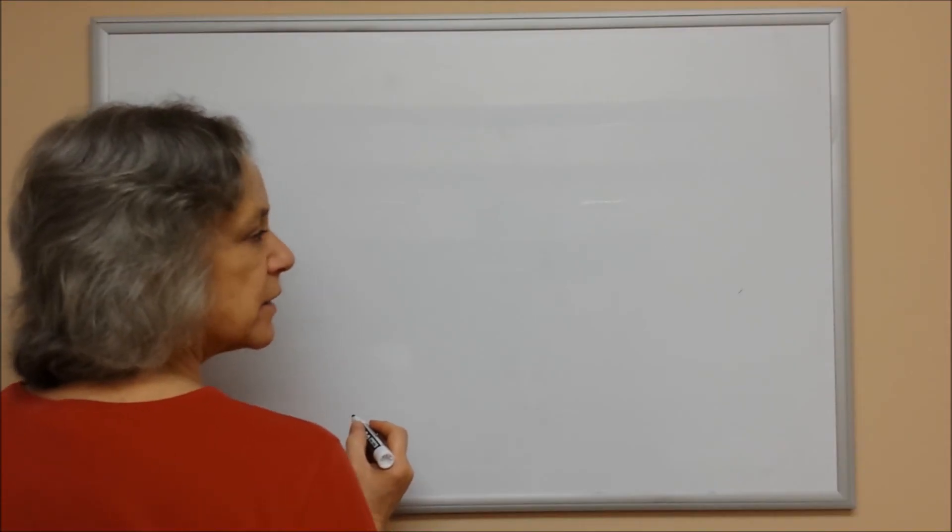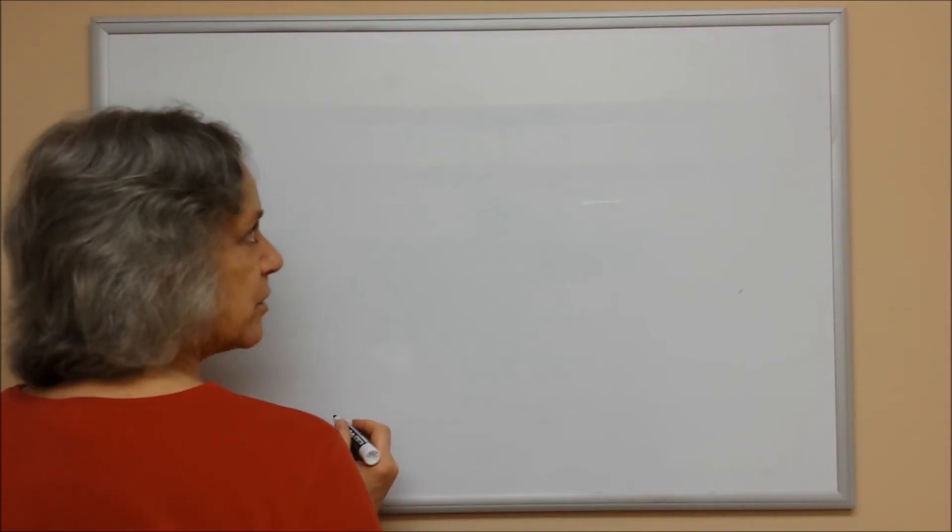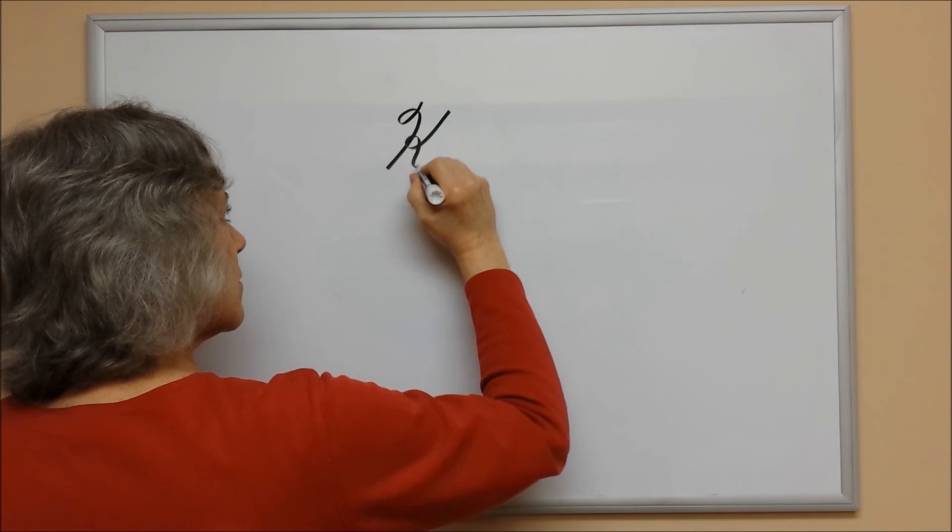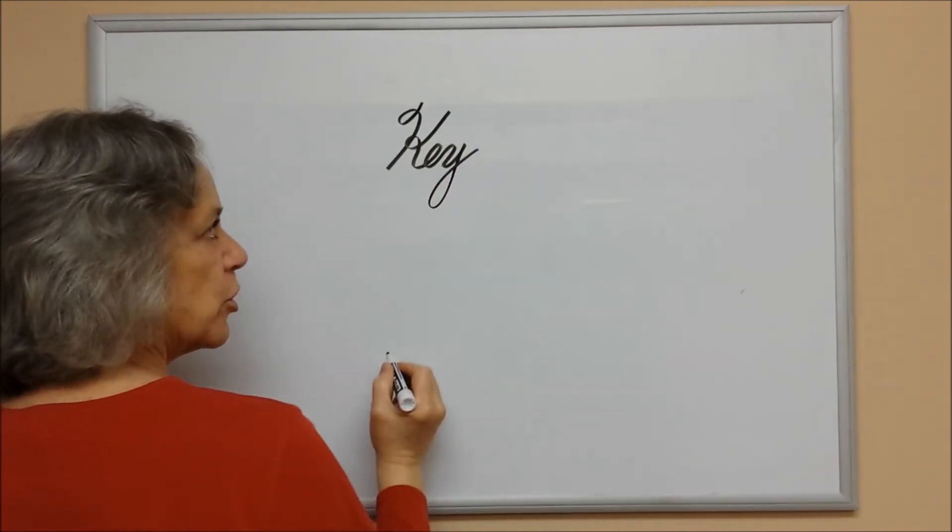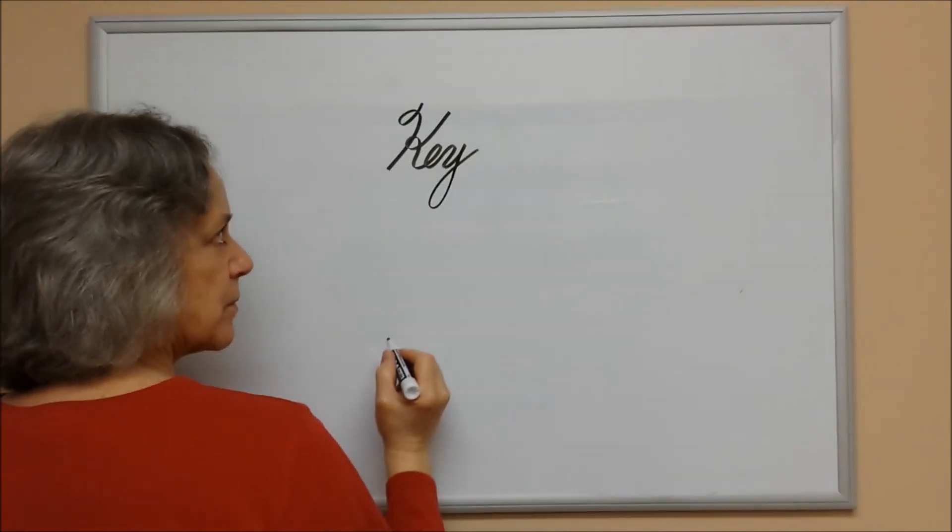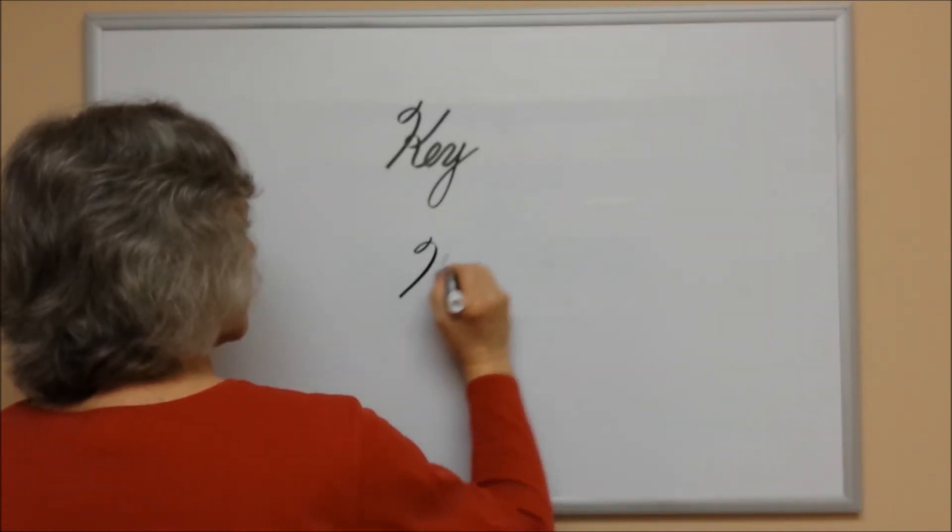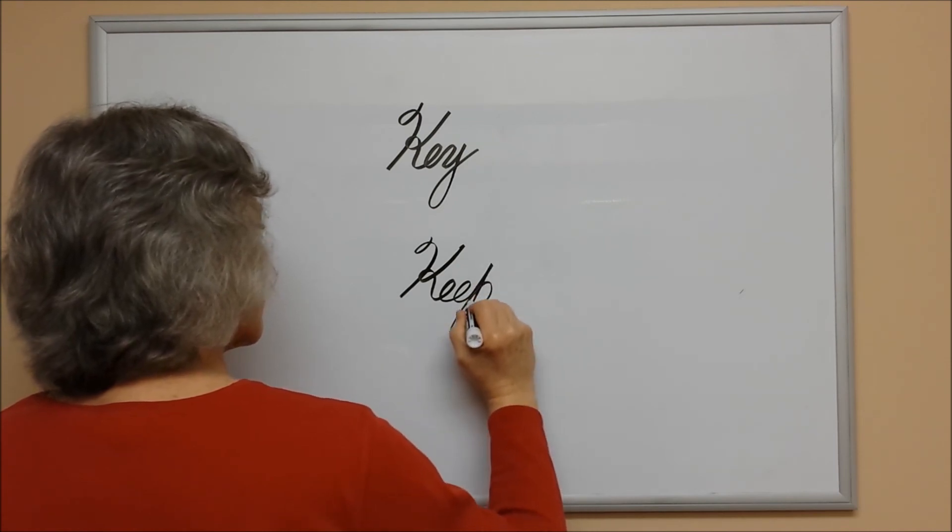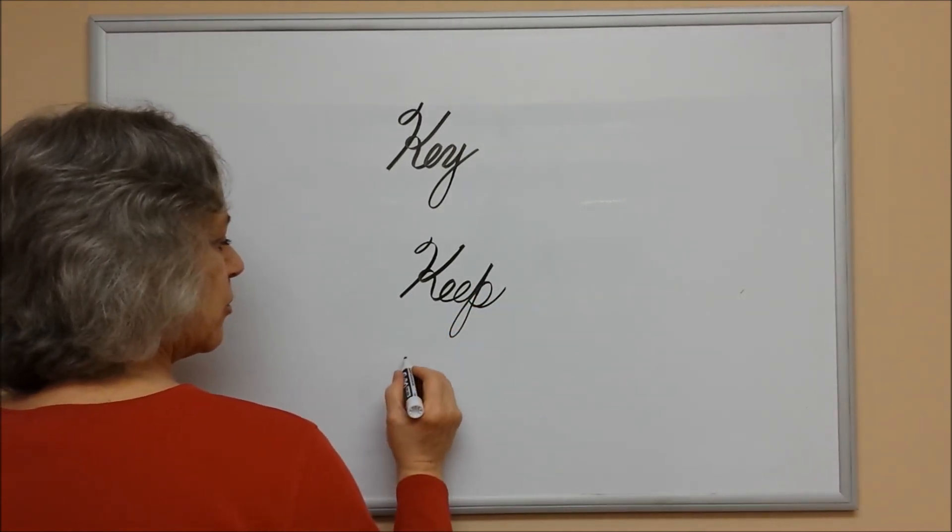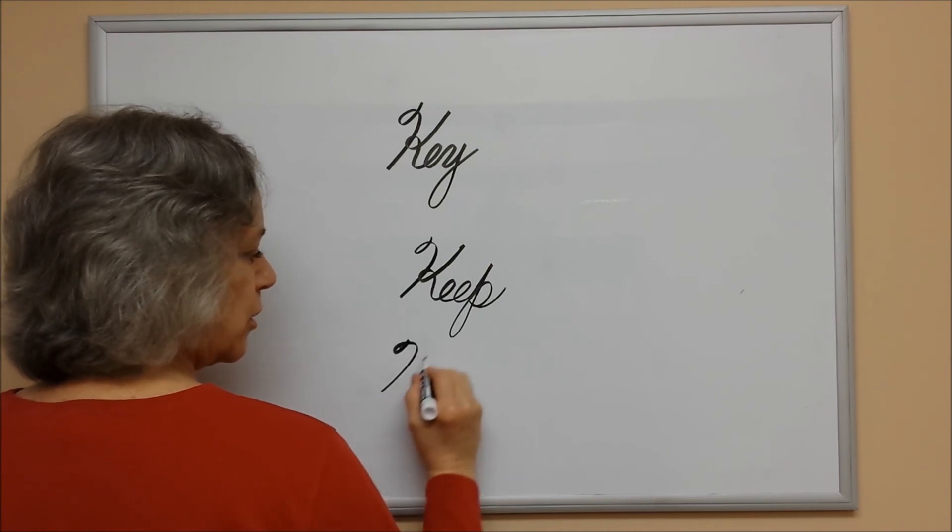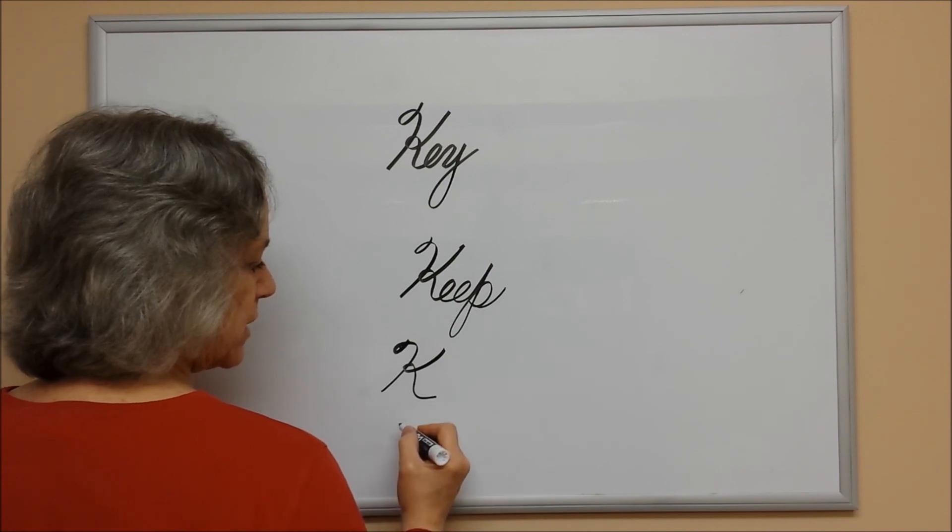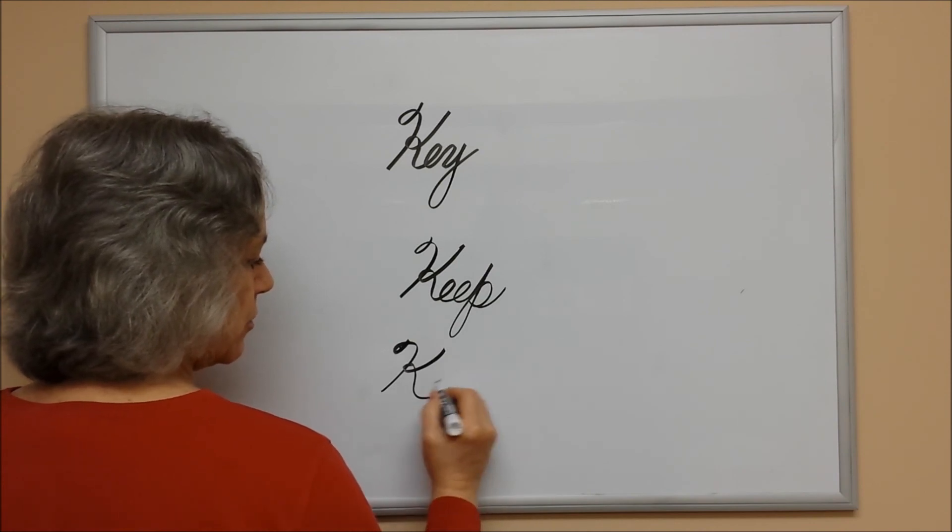The capital K can be connected to the next letter. It's not always connected but it can be, like this, in the word keep. However, with some words you might not want to connect it. You might want to just stay there depending on what your next letter is. So that's up to you.